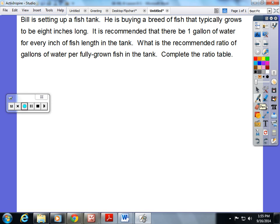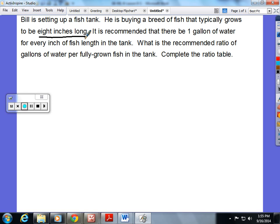He is buying a breed of fish that typically grows to be 8 inches long. It is recommended that there is one gallon of water for every inch of fish length in the tank. What is the recommended ratio of gallons of water per fully grown fish in the tank?